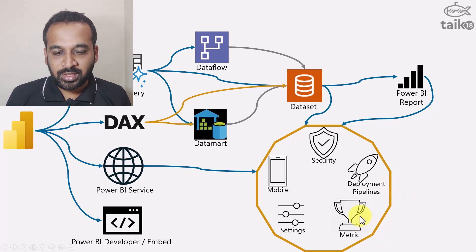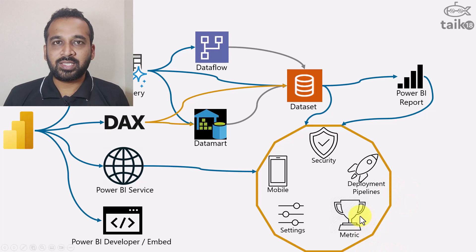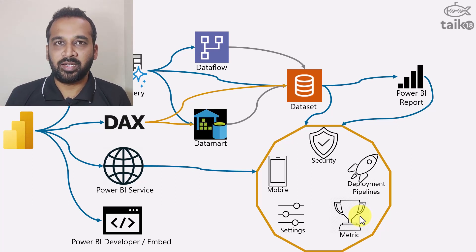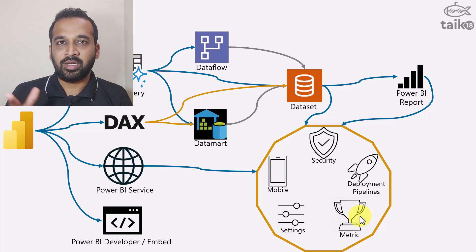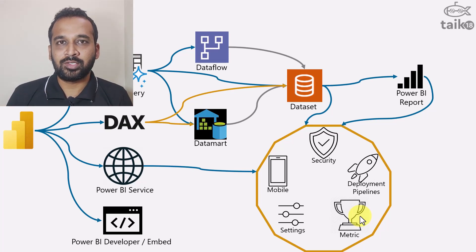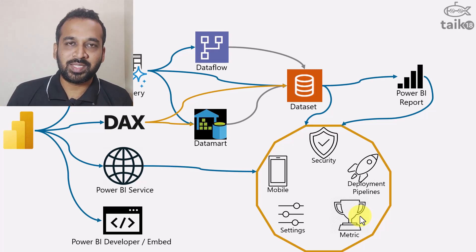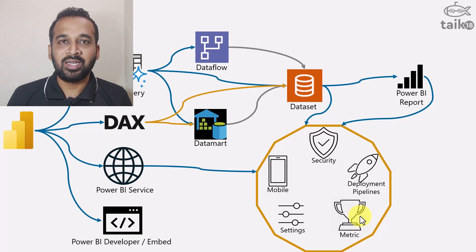The last feature in Power BI service is metrics — previously mentioned as Power BI goals. If you want to track strategic planning in your organization, like your company's overall performance, quality, and sales targets in a single window, and track that performance over the year, months, or on a daily basis, you can do that in one screen — and that is called a Power BI metric.